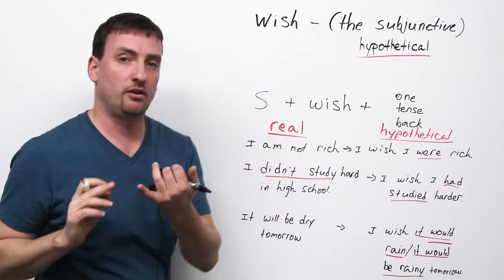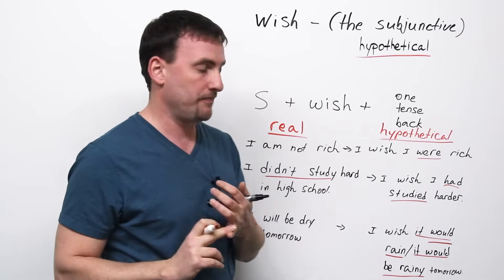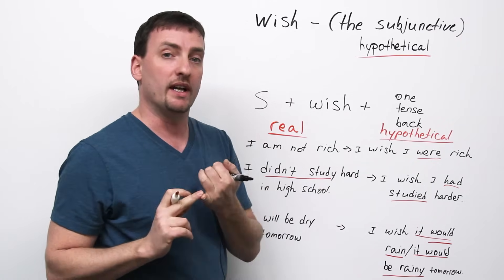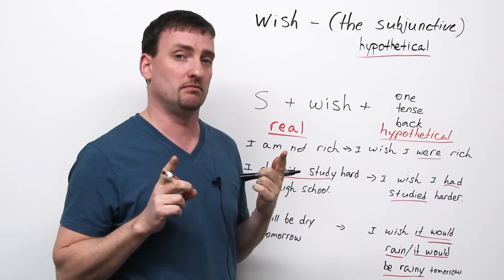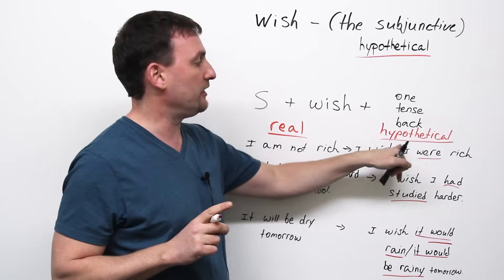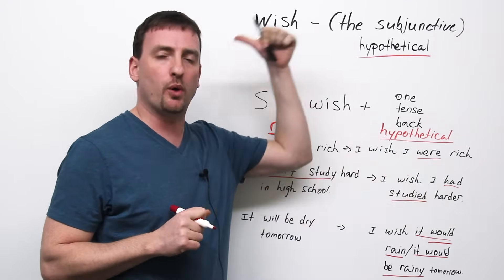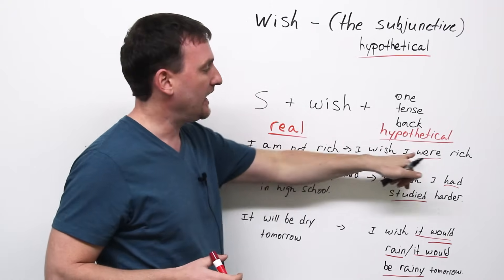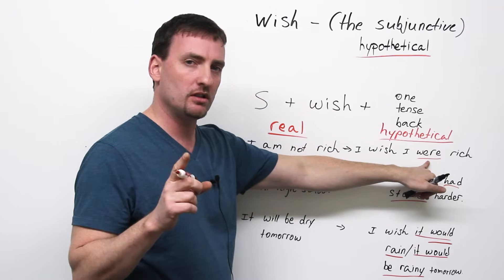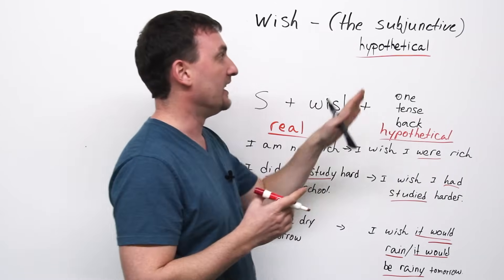So, again, two very important things to remember about using wish. One, anything you say with the wish verb is not real. Two, anything you say with the wish verb, you're going back one-tenth from the real situation. And always remember were, not was. That's the main thing.